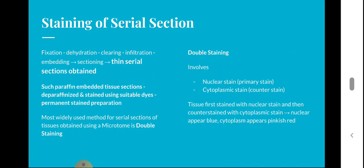During the staining procedure the steps are: fixation, dehydration, clearing, infiltration with embedding media, embedding to form a block, and then sectioning using a microtome to obtain serial sections. Before staining these serial sections, there is an additional step because the sections are paraffin-embedded — the wax must be removed from the sections. This step is known as deparaffinization.